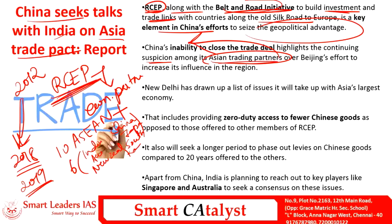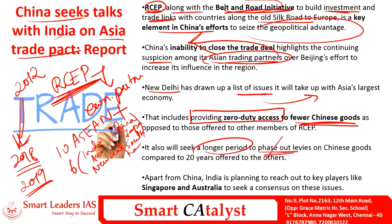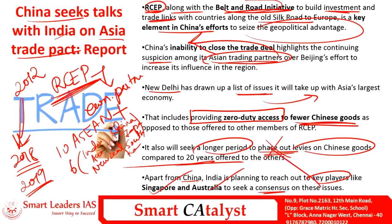From India's side, a list of issues has been drawn up for China regarding RCEP. The two major issues are: providing zero-duty access to fewer Chinese goods, and India seeking a longer period to phase out levies on Chinese goods — longer than the 20 years offered to other countries. Apart from China, India is also planning to reach out to key players like Singapore and Australia to seek a consensus on these issues.